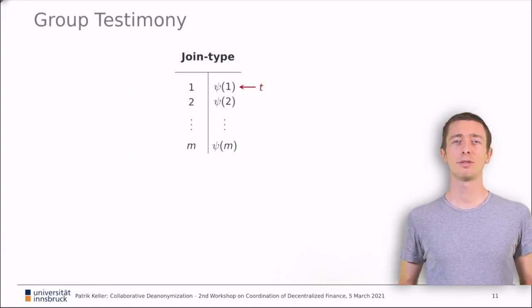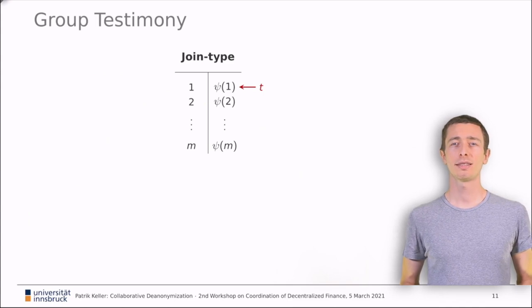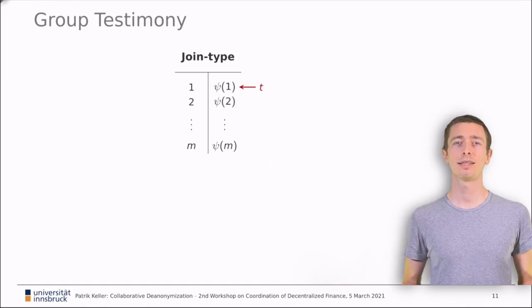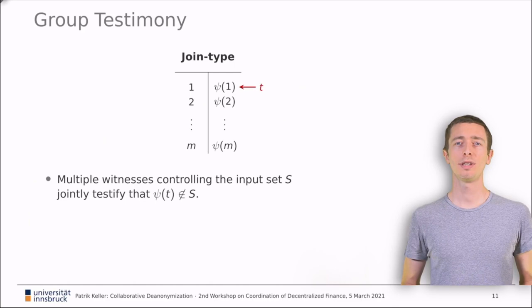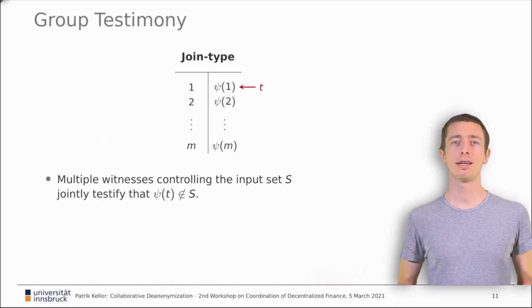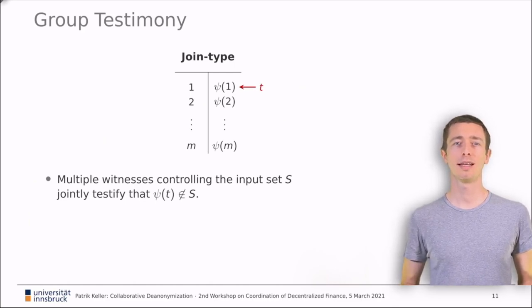The basic idea of group testimonies is that all the witnesses coordinate on a single testimony that maintains the anonymity set size at m-1 while reducing the anonymity set size of the true suspect to 1. With group testimonies, the police learns one link for their investigation but nothing else.